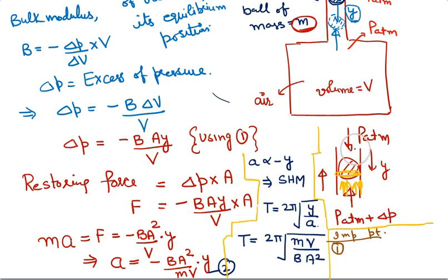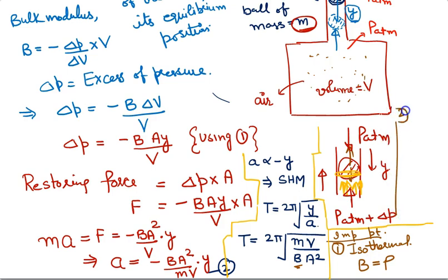Important point number 1: if oscillation of this ball is isothermal, if the process of oscillation is isothermal, then bulk modulus will be equal to pressure.